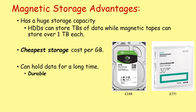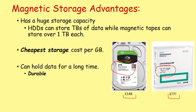Magnetic storage is typically very durable. Here we've got an 8 terabyte hard disk drive from Seagate — that was £148 for 8 terabytes. And here we've got some magnetic cartridges — a 30 terabyte magnetic cartridge for only £77 for 30 terabytes. Now, that type of storage is incredibly slow. You're not going to use it in day-to-day life, but if you need to back up a lot of data very cheaply, that's one way that you could do it.